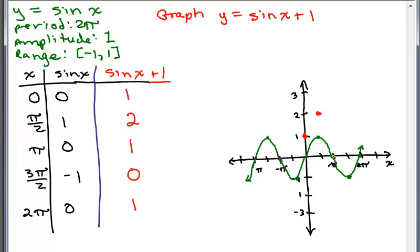Pi, 1, so here's π up at 1. 3π/2, 0. So I've got 3π/2, 0. And I've got 2π up at 1.